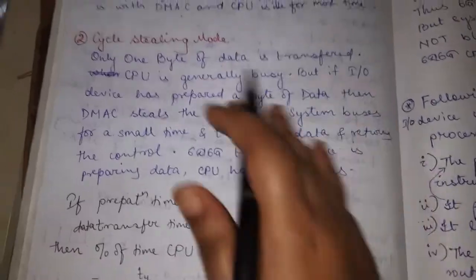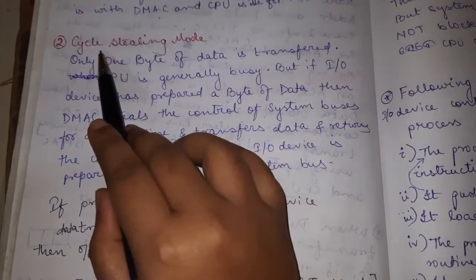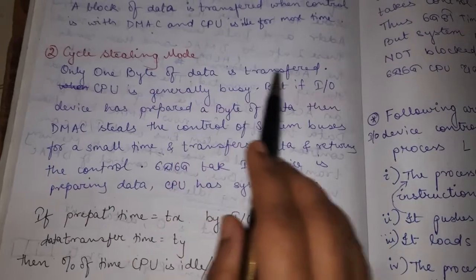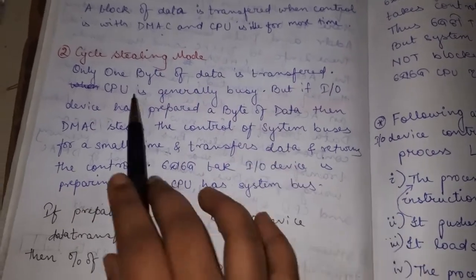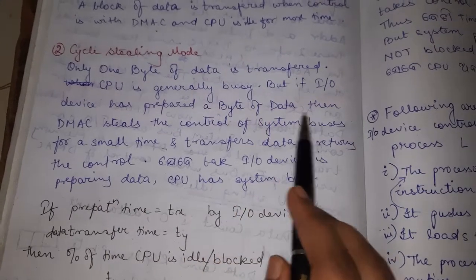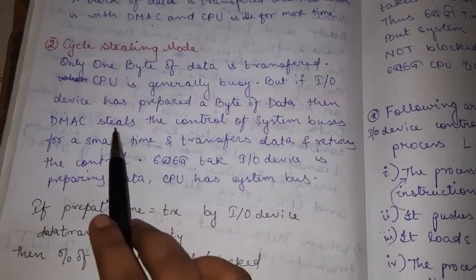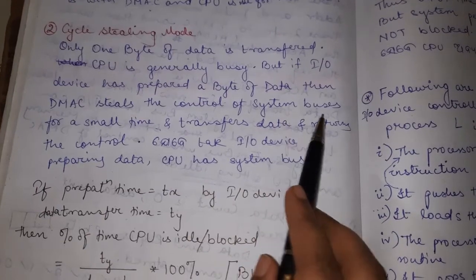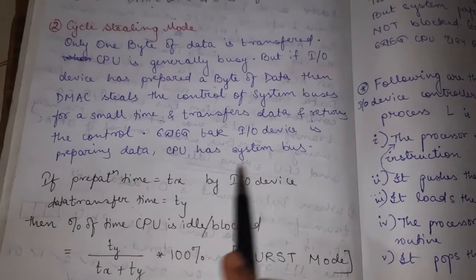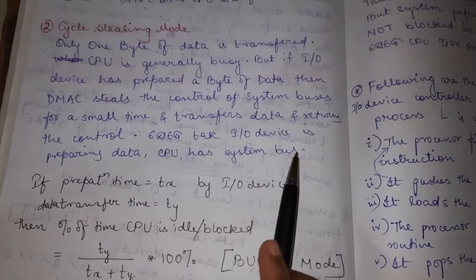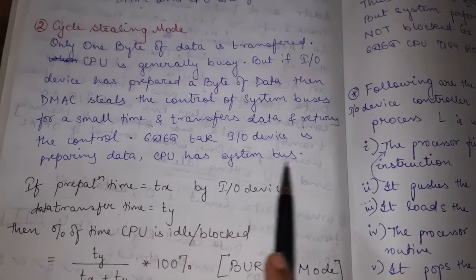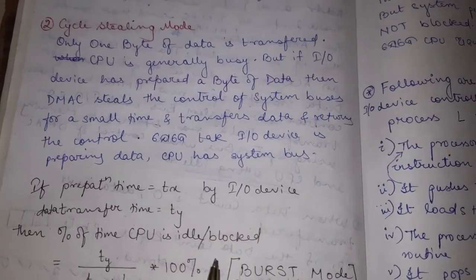The second mode is cycle stealing mode. What happens is only one byte of data is transferred. The CPU is generally busy, but if the I/O device has prepared a byte of data, then DMA steals the control of the system bus for a small time, transfers the data, and returns control. Until the I/O device is preparing data, the CPU has the system bus.